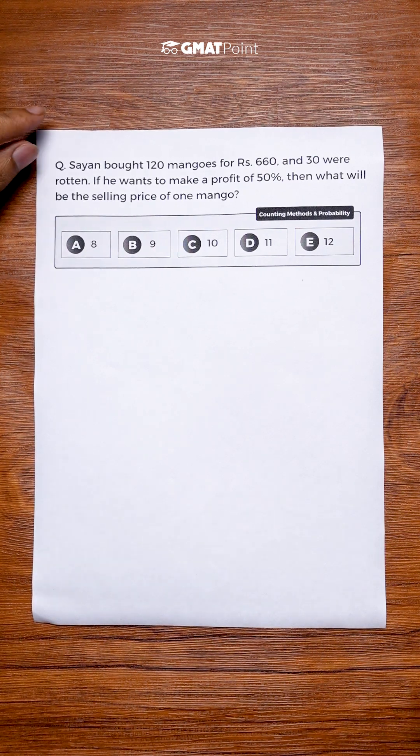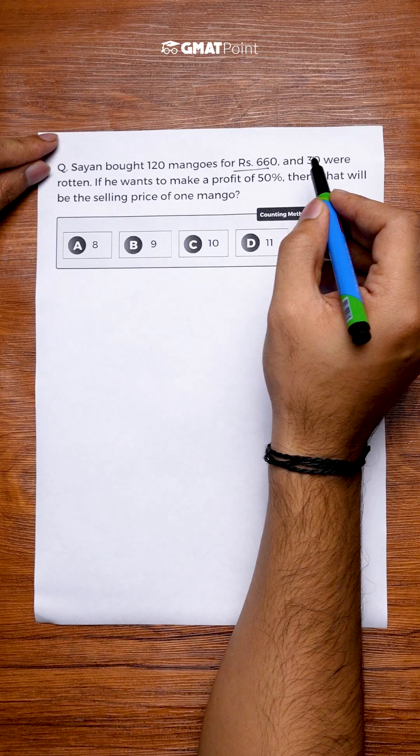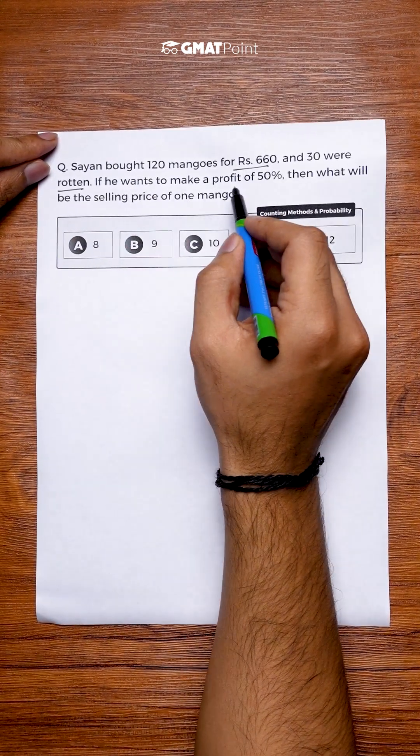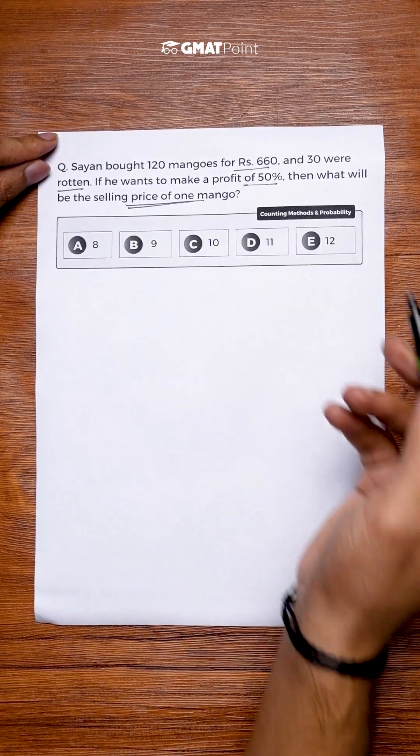Let us see how to solve this question under one minute. Sayan bought 120 mangoes for 660 rupees and 30 of them were rotten. If he wants to make a profit of 50 percent, then what will be the selling price of one mango?